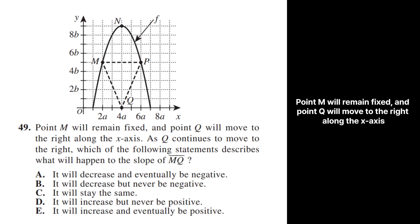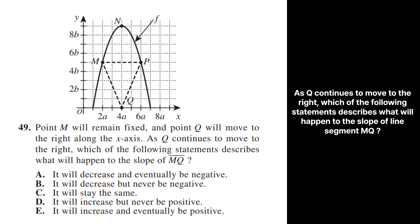49. Point M will remain fixed, and point Q will move forward. As Q continues to move to the right, which of the following statements describes what will happen to the slope of line segment MQ?